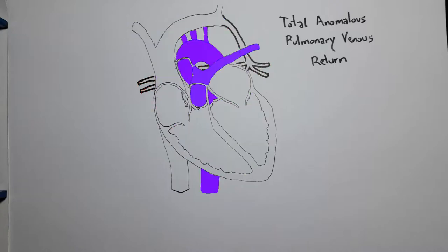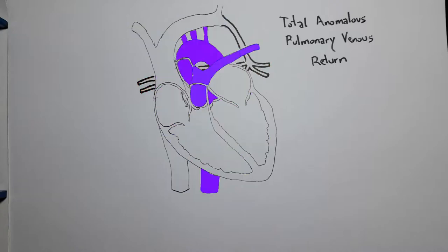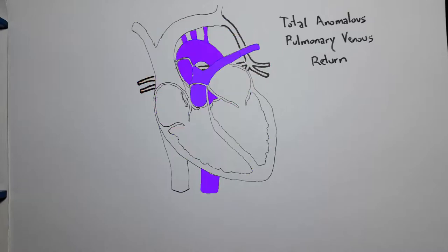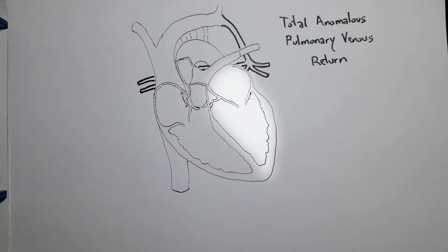Total anomalous pulmonary venous return is an extremely long name and also an extremely intuitive name for a congenital heart defect, a cardiac malformation that consists essentially of the pulmonary veins draining into the right side of the heart instead of the left side of the heart, as they should.